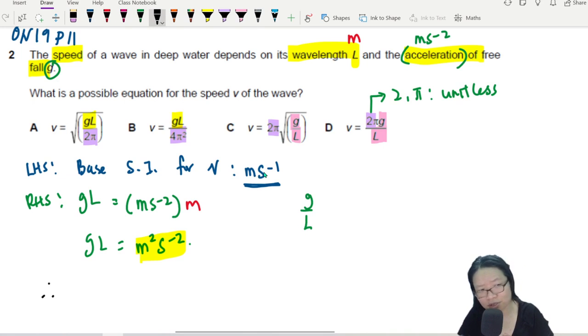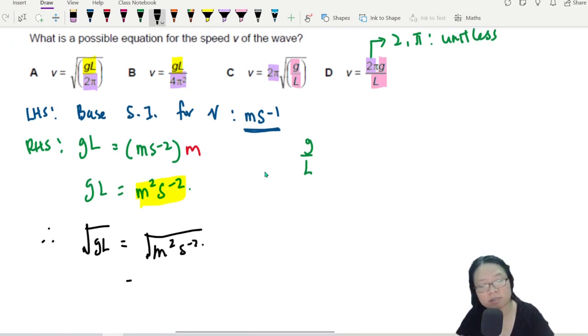So hence, again, this is objective. The way you're working, not that important. Paper 2 matters, paper 1. So hence, if I go and take the base unit for square root of GL, I will square root M²S⁻². And what happens when I square root this, ladies and gentlemen? I'll get MS⁻¹.